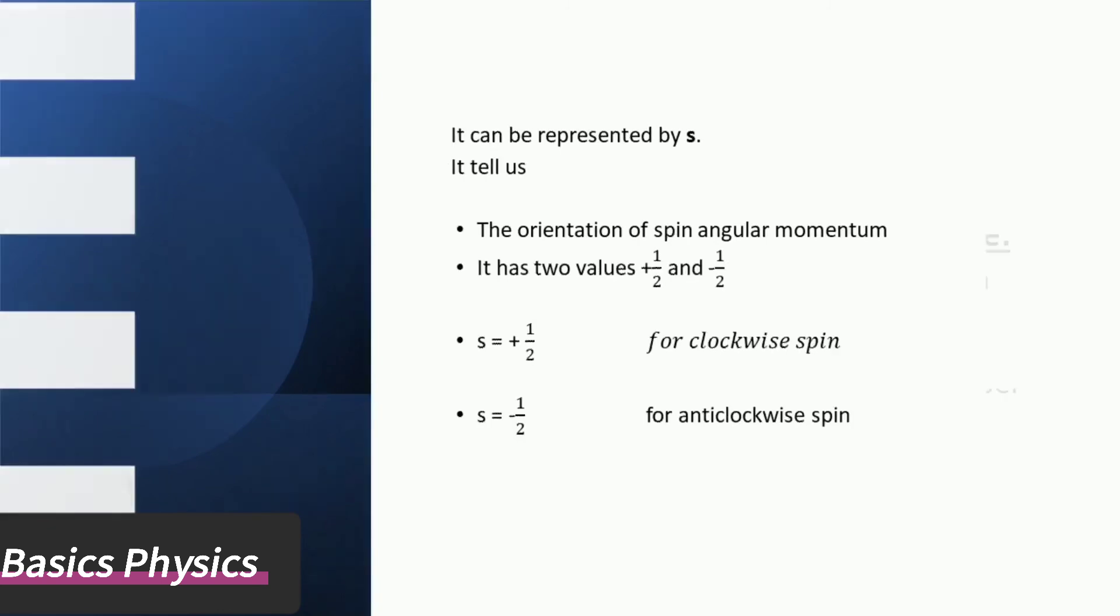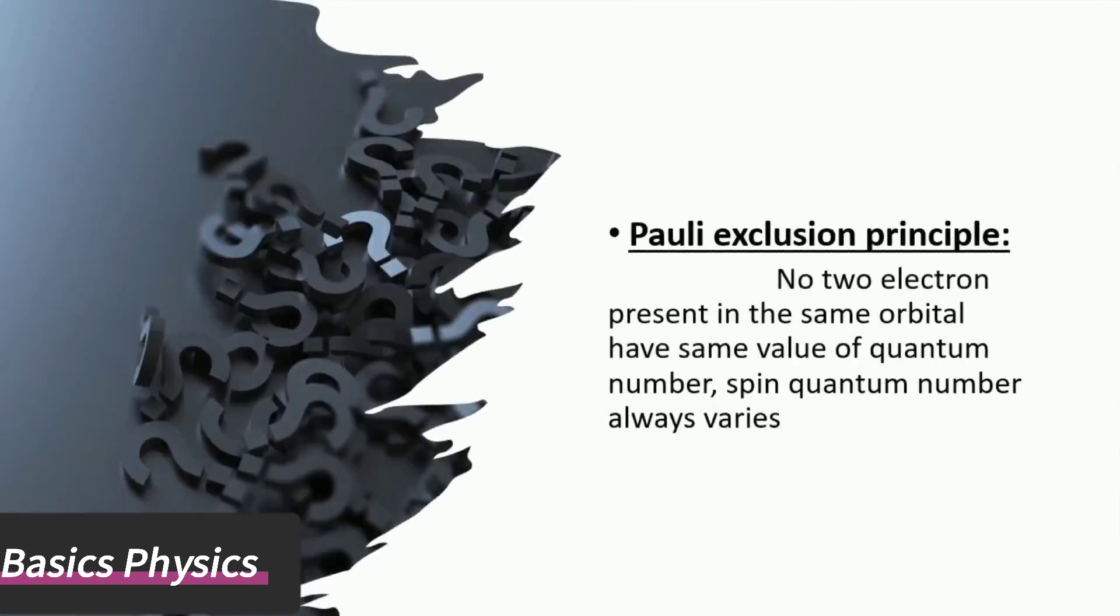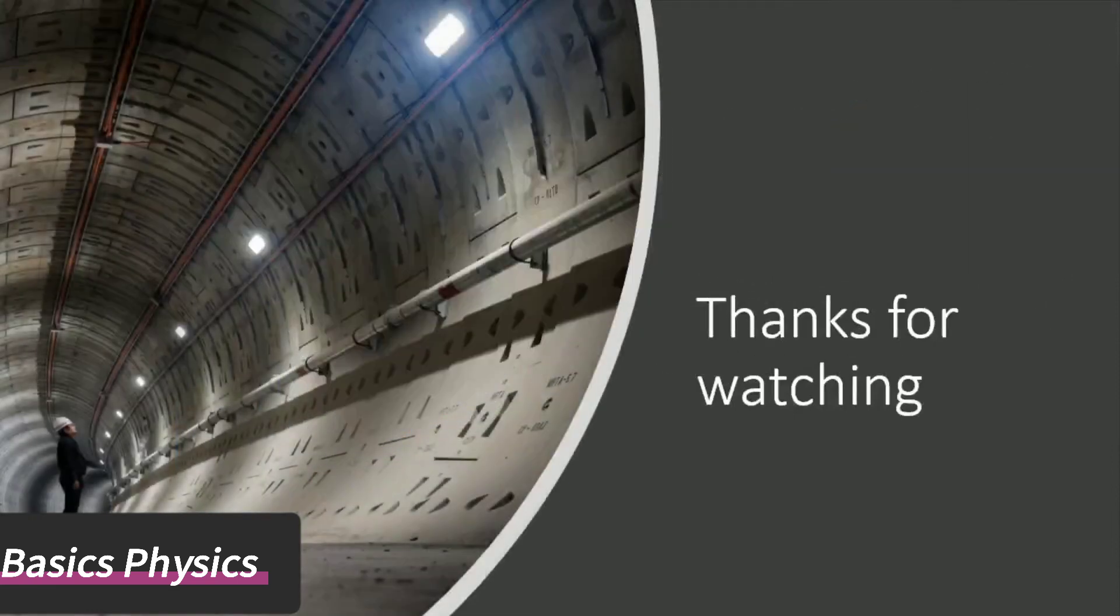Pauli exclusion principle states that no two electrons present in the same orbital have the same value of quantum numbers. Spin quantum number always varies. Thanks for watching us. I will see you next time.